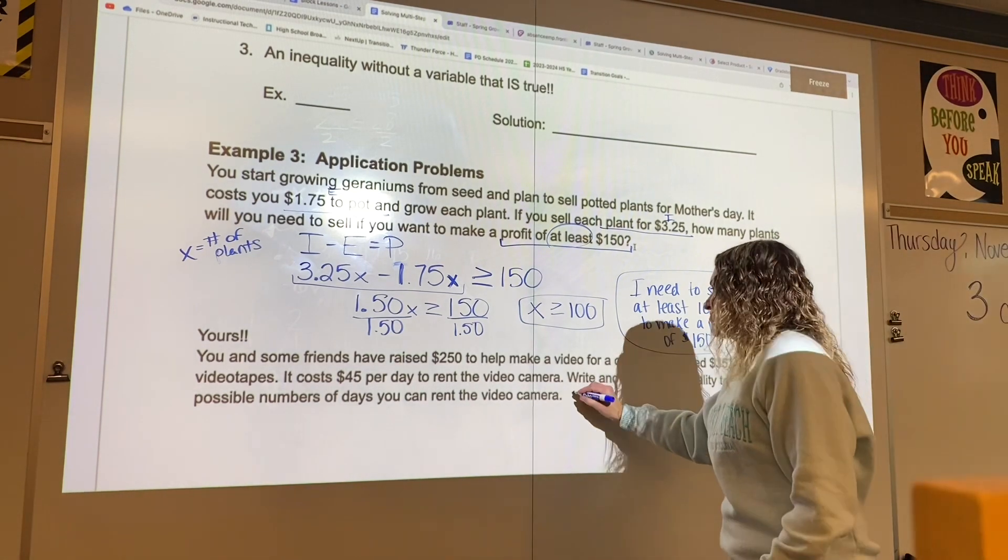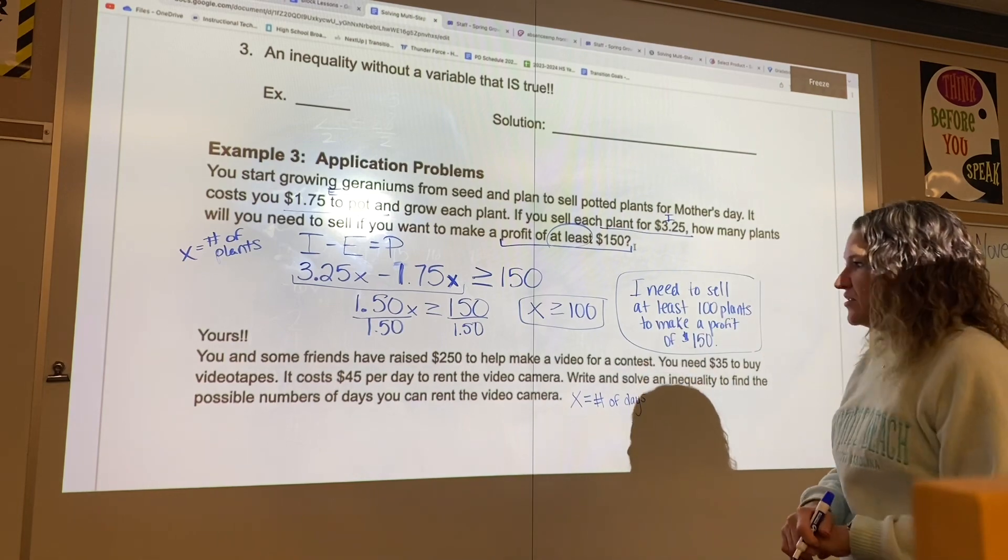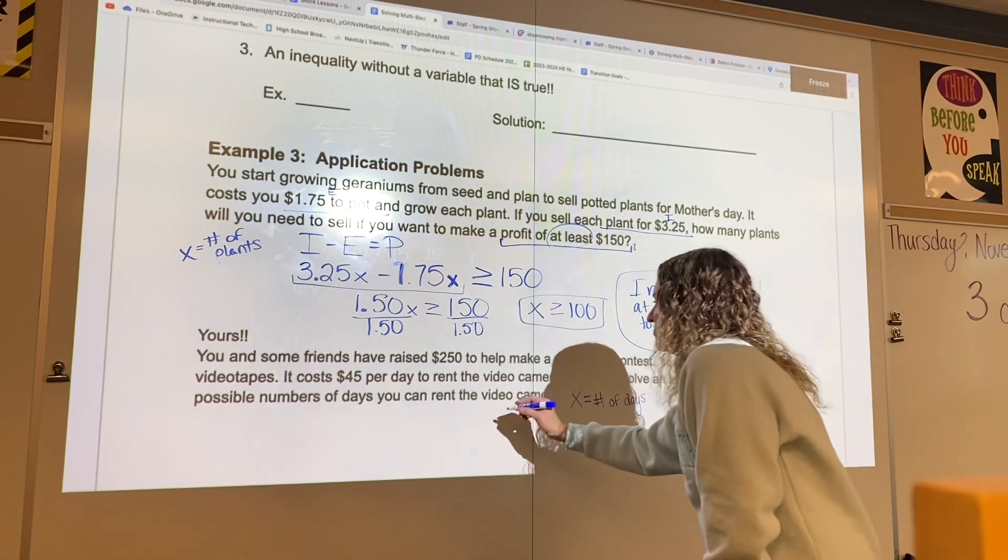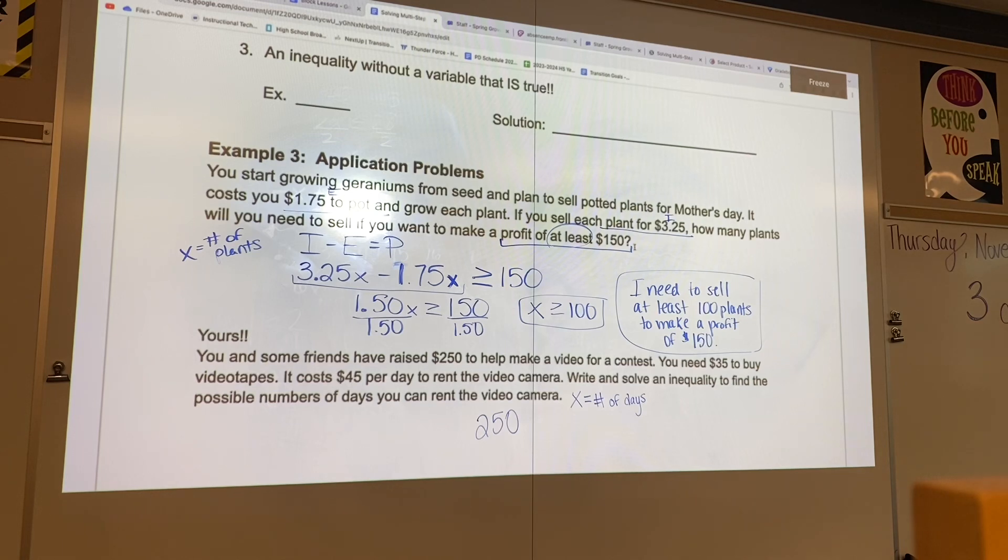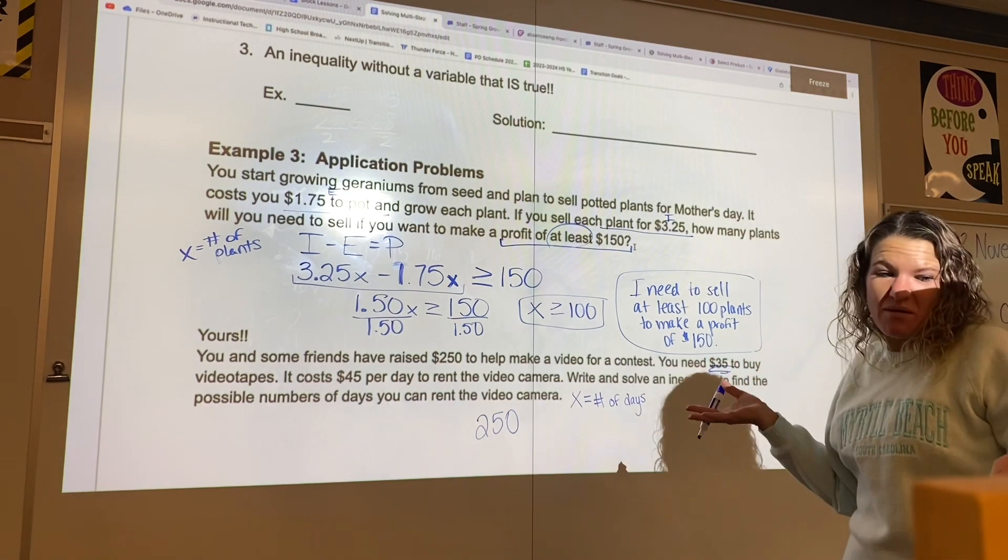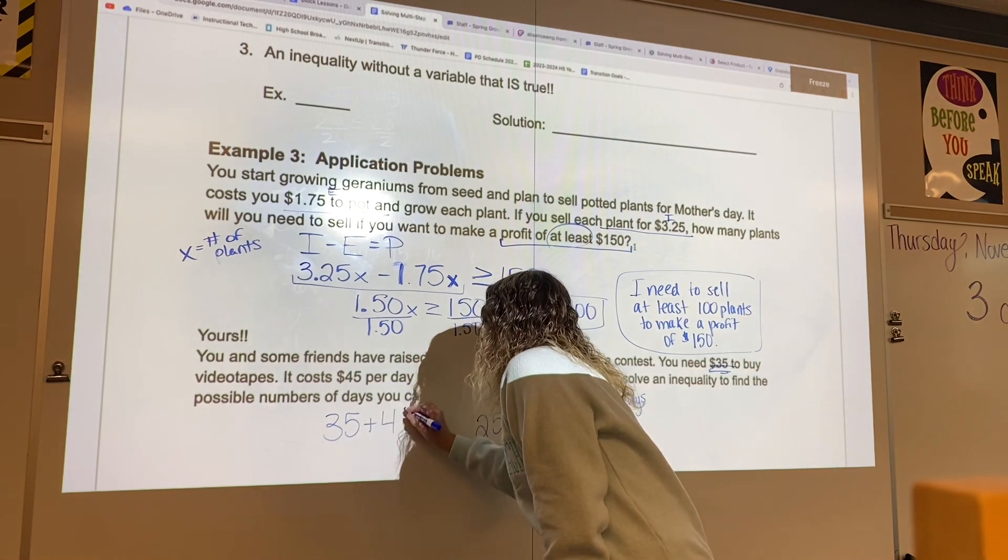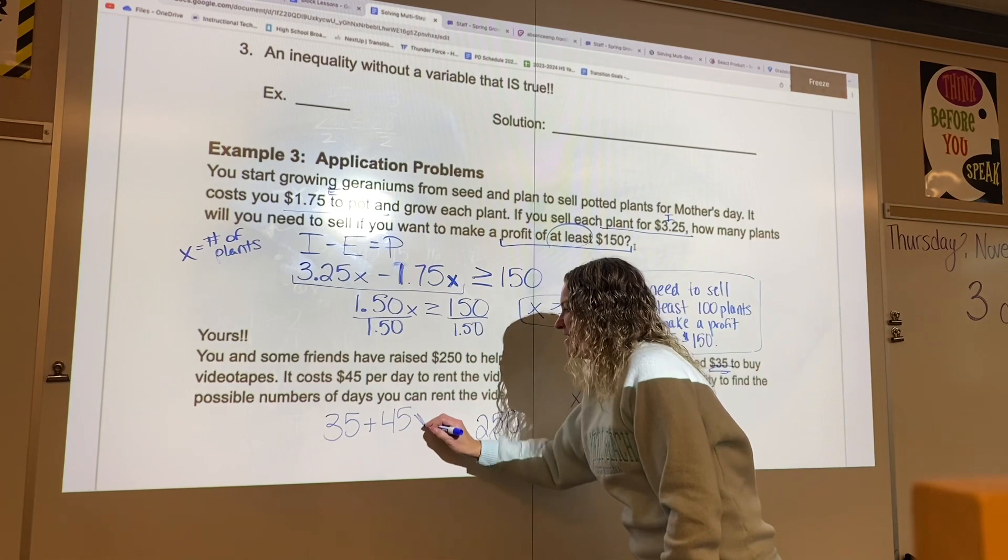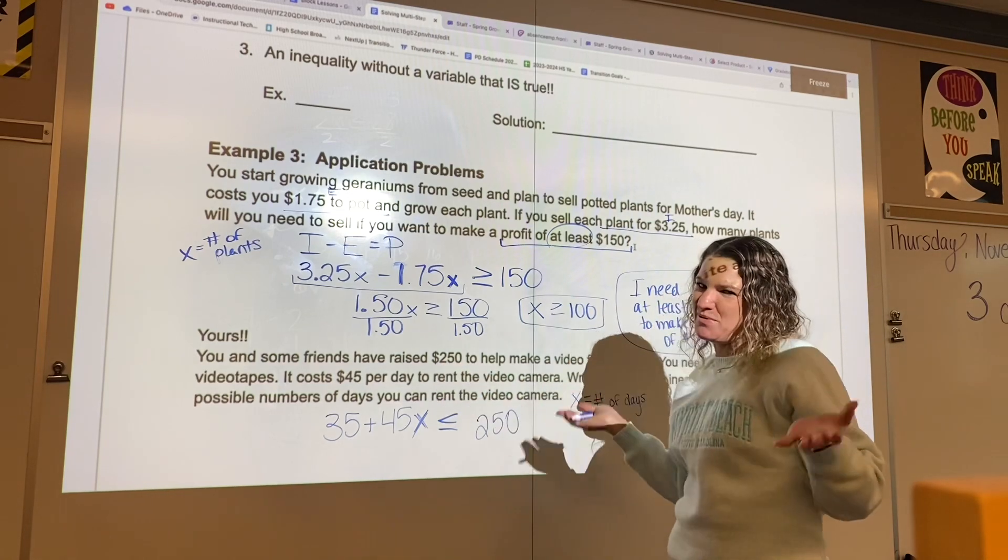Okay, so we know that we're trying to solve for the possible number of days. You and your friends have raised $250, so that's going to be our total. And it costs $45 per day to rent that video camera. But you also need to buy videotapes. All right, $35 to buy videotapes. You don't know how many videotapes that is, but that's okay, because we have $35. That's how much you spend. It's $45 per day. So we're going to multiply that times the number of days. And that is going to want to be less than or equal to the amount of money that you've already raised because you can't spend more than that or else you're going to be in debt.